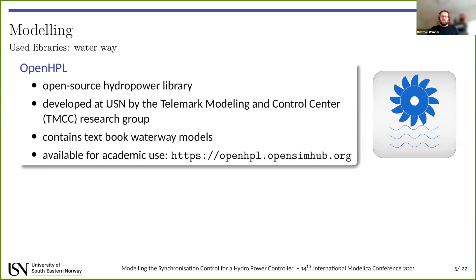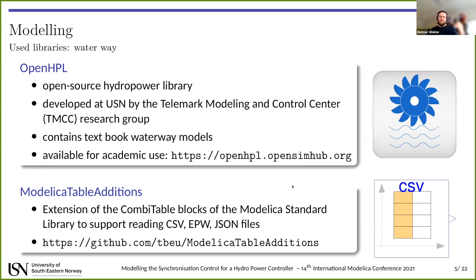In addition to that, we also normally, especially when you have models where you work against real-time data, it's quite convenient to be able to load in log data and just basically run against those data. Unfortunately the standard library doesn't provide a very good interface for that. Basically the CSV format, which is quite convenient because in industry, at least here what I've experienced, when you want to have log data, often you get an Excel sheet provided, and then it's quite easy to convert this Excel sheet to CSV and you can load this directly in with the help of this Modelica Table Extensions, which is a library which was also presented here at this conference, and it also provides support for EPW weather data and JSON files. This is one part we're actually using.